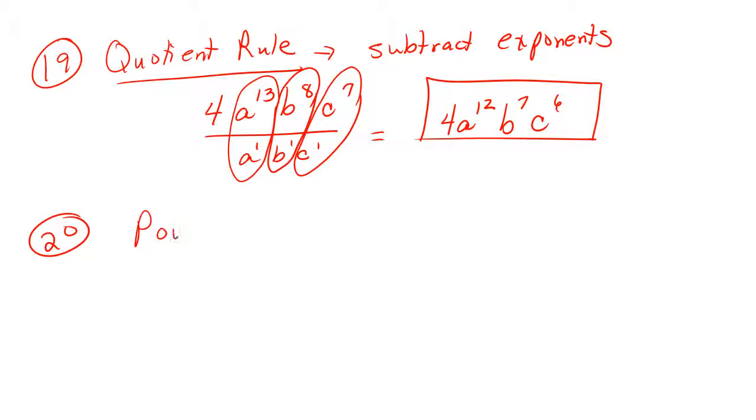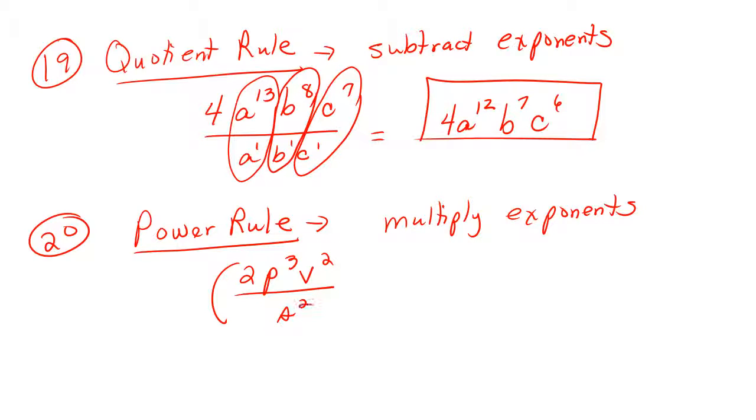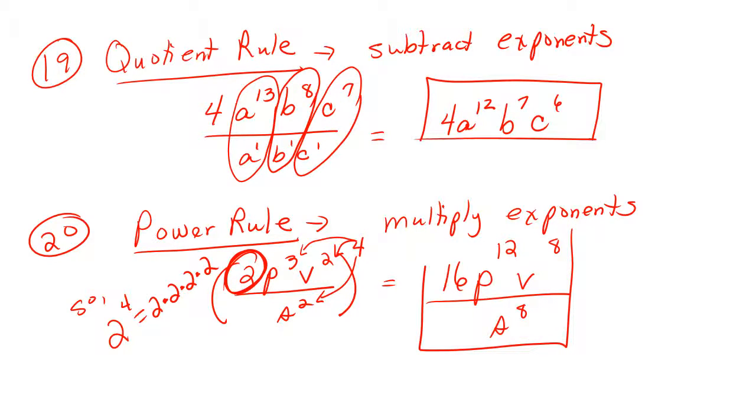Question 20 asks you to use the power rule. The power rule says you are to multiply exponents. The power rule will always have a problem inside parentheses. When we talk about multiplying exponents, we're talking about the exponents inside the parentheses versus the one on the outside. So I multiply 4 times 3, which is 12, p to the 12. 4 times 2 is 8, v to the 8th. 4 times 2 is 8 on the bottom, s to the 8th. But 2 in front is a regular number, an integer. So we say 2 with exponent 4 is 2 times 2 times 2 times 2, which equals 16. So my final answer would be this.